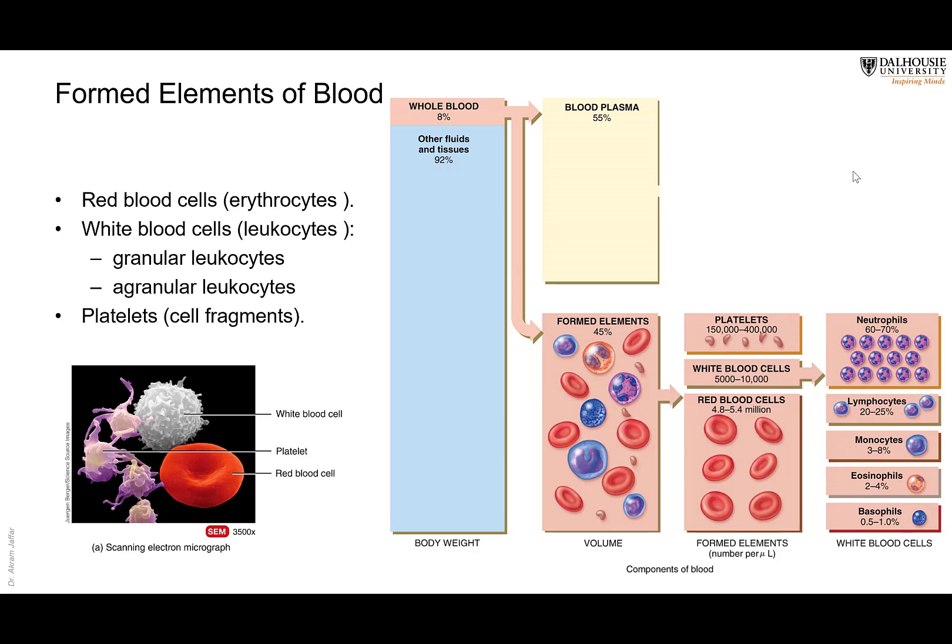White blood cells, the leukocytes — 'leuco' meaning white — are actual cells; they have nuclei. You can differentiate between them according to the shape of the nucleus and the granules present in the cytoplasm, since they can be either granular or agranular.